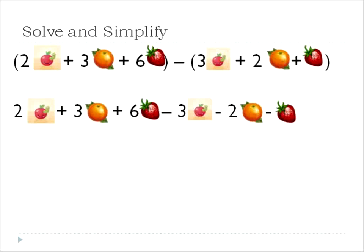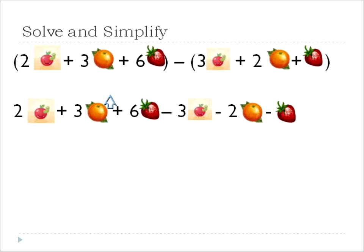So in this case when we're subtracting three we would say minus three, then we're also subtracting two oranges, and we're also subtracting one strawberry. We have to remember that when we're taking from this original set of parentheses, we are subtracting each type from the second set of parentheses.